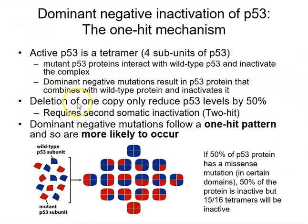Some cancers show deletion of one copy of the P53 gene — reducing protein by 50% — followed by a second somatic mutation, following a classic two-hit tumour suppressor gene pattern. By contrast, dominant negative mutations follow a one-hit pattern: one key mutation in one copy of the gene produces a protein product that inactivates the wild-type protein.